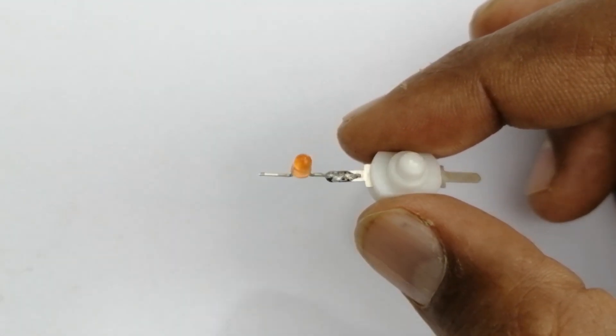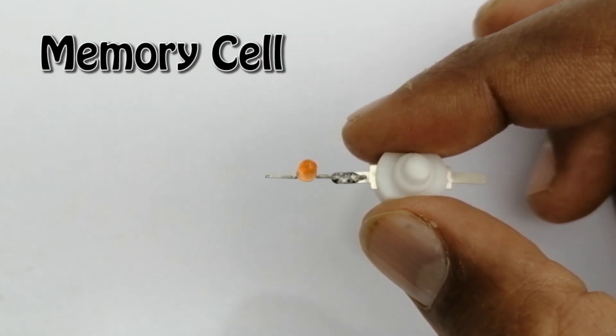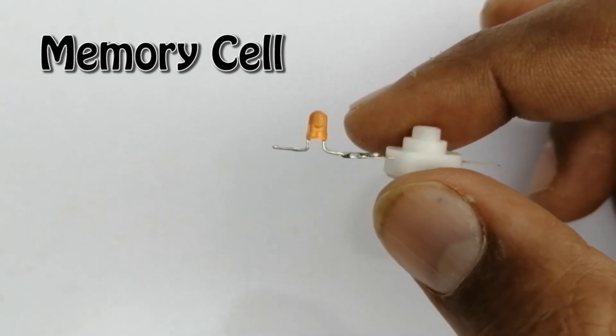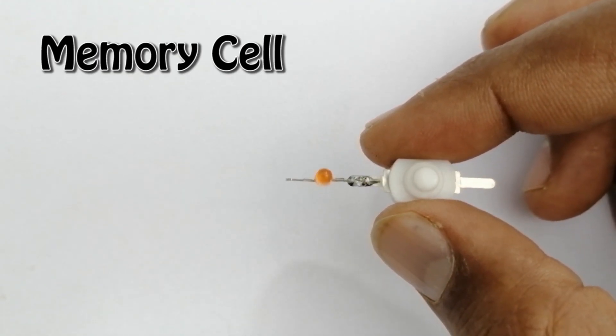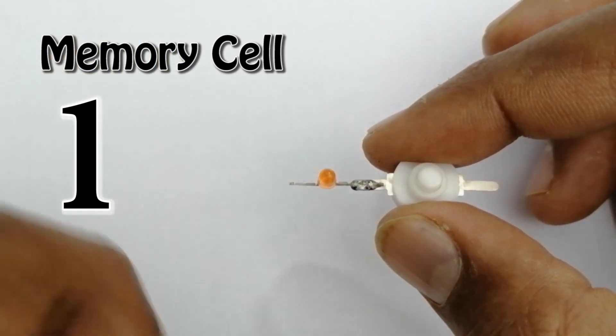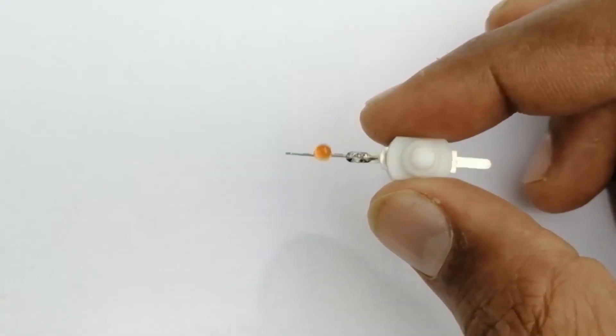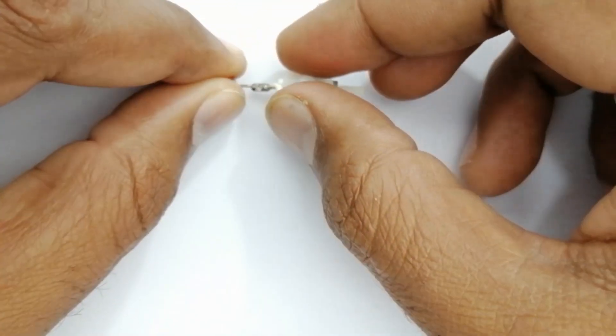Friends, we have created a single memory cell by connecting the switch to the LED. A memory cell can store a bit. This bit can be 1. This bit can be 0. Let's save our data in this memory cell.